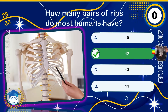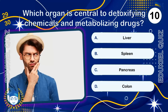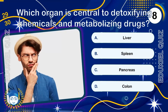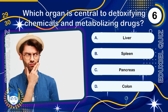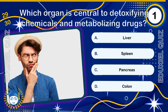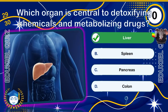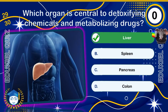Which organ is central to detoxifying chemicals and metabolizing drugs? The liver is the largest internal organ, weighing about 1.5 kilograms in adults. It performs over 500 vital functions, including detoxification, bile production, and nutrient storage. Remarkably, the liver can regenerate even after losing up to 70 percent of its mass.